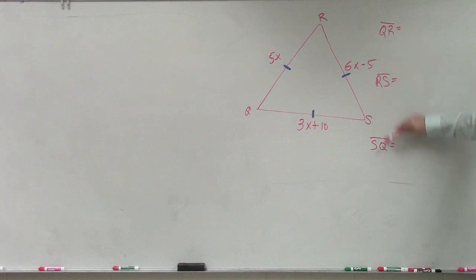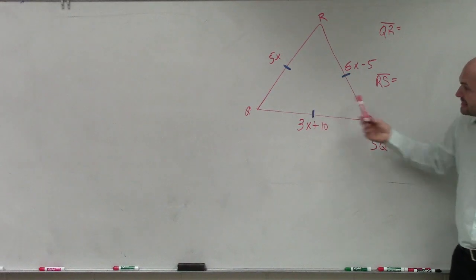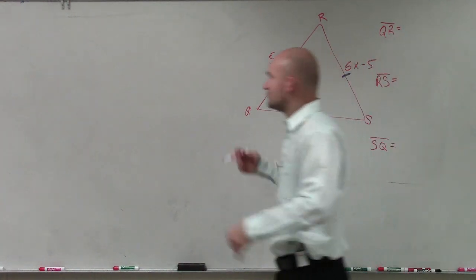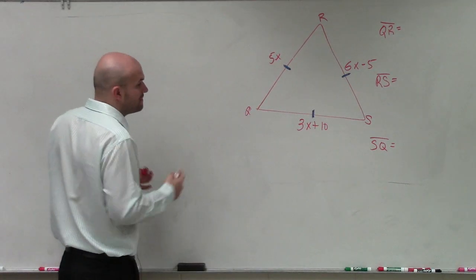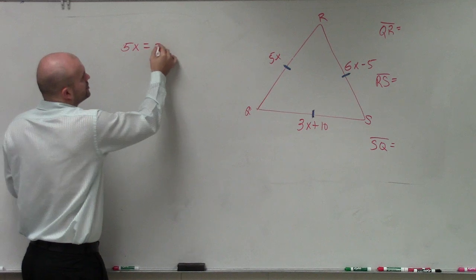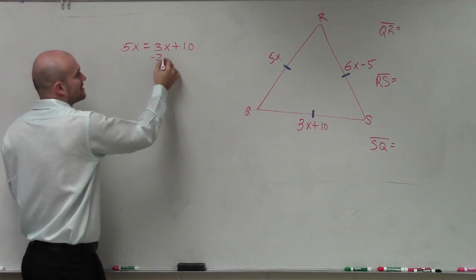They're asking us to find the values of each of these sides. To do that, we have to find the value of x. The only thing we know is that each one of these sides are equal to each other. So I don't need to write an equation for all of them equal to each other. I just need to choose an equation where two of them are equal. Then I solve for x.